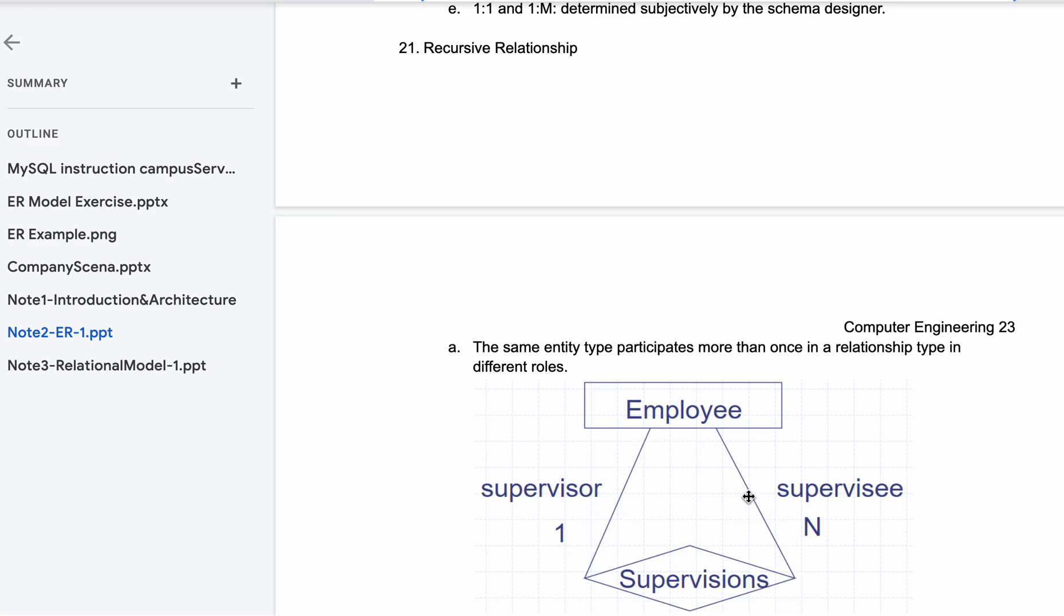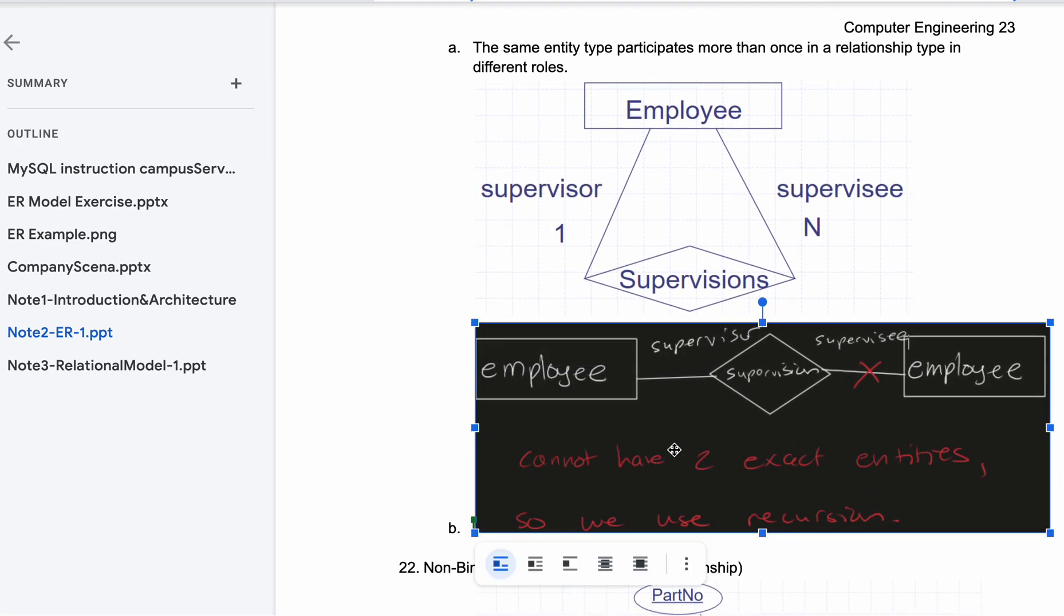Now if we have something like this versus something like this, this one would be incorrect, but they're both basically the same thing. It's incorrect because we cannot have two exact entities, which we have here. This is why we use recursion.